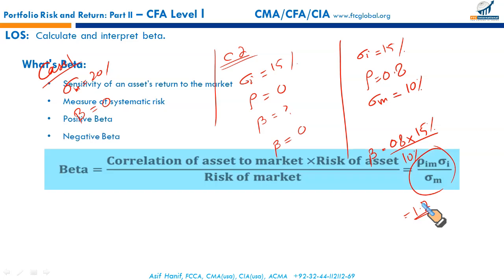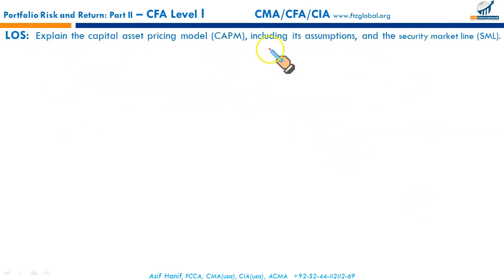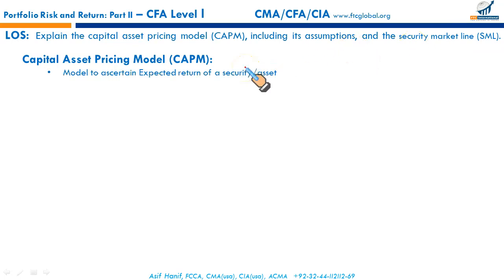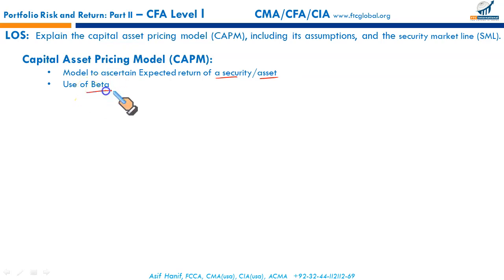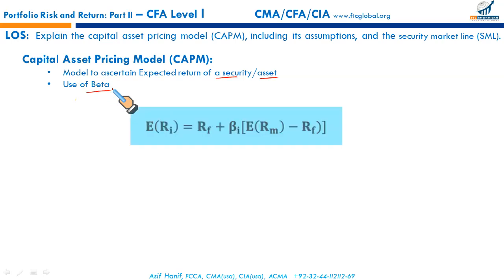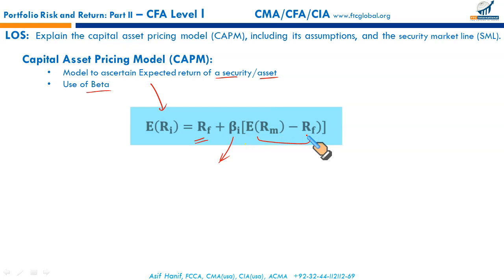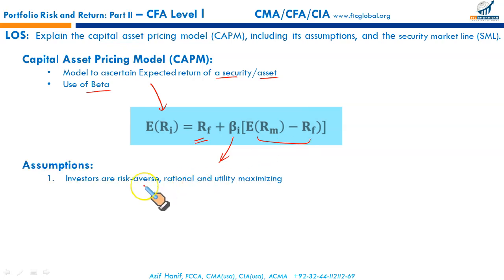That ends the LOS on calculating and interpreting beta. Next we have: explain the capital asset pricing model, including its assumptions and the security market line. CAPM is a model to ascertain the expected return of a security or asset. The primary determinant in CAPM is beta — beta captures systematic risk. The CAPM equation: expected return on the asset equals the risk-free rate plus beta times (expected return on the market minus the risk-free rate).